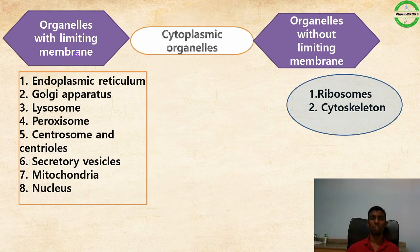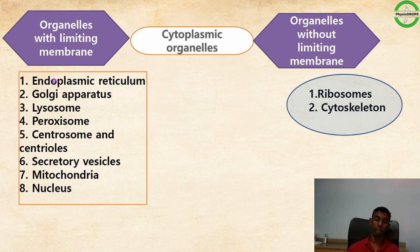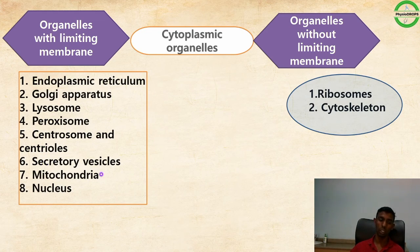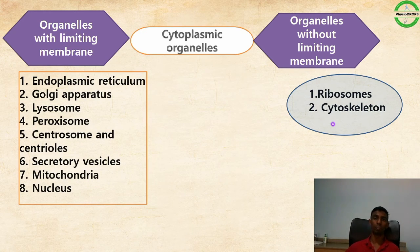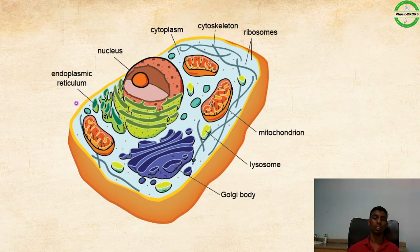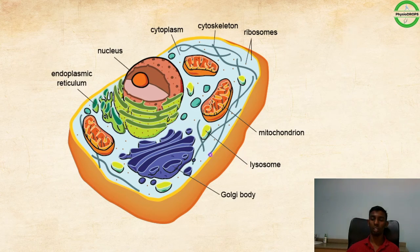Organelles are divided into two major groups: organelles with limiting membrane and organelles without limiting membrane. Organelles with limiting membrane include endoplasmic reticulum, Golgi apparatus, lysosomes, peroxisomes, centrosomes, secretory vesicles, mitochondria, and nucleus. Organelles without limiting membrane include ribosomes and cytoskeletal components.